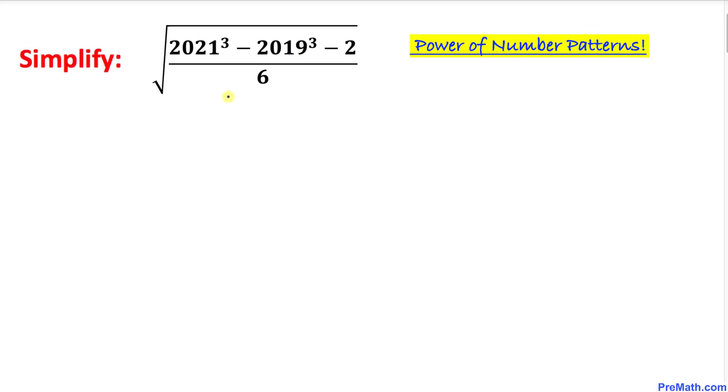Now let's look at our problem. It's the square root of 2021³ minus 2019³ minus 2, all divided by 6.